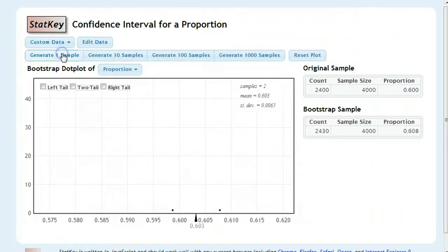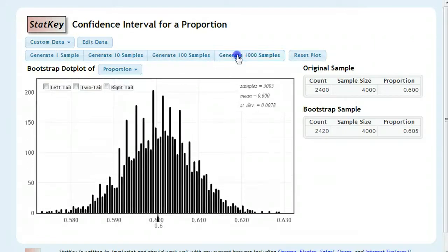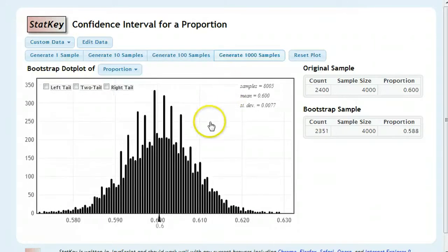Generate a sample, generate a sample, and we get things kind of all over the place. Cut to the chase, do a few thousand of these. And let's look where our middle 95% happens to fall.